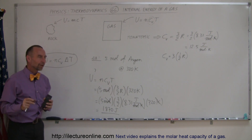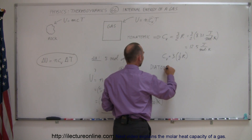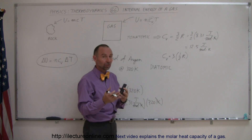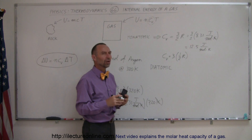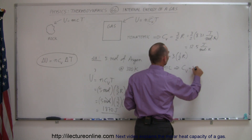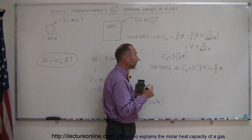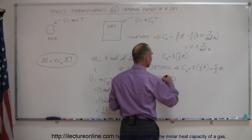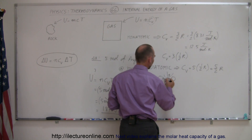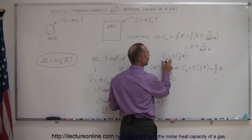What about atoms that are not monatomic? For a diatomic molecule — examples include hydrogen (H₂), oxygen, and nitrogen in the air — there are additional degrees of freedom, so C sub v equals 5/2 R. A diatomic molecule has two additional rotational degrees of freedom: it can rotate about one axis and about the axis going from front to back, adding two degrees of freedom beyond the three translational ones.